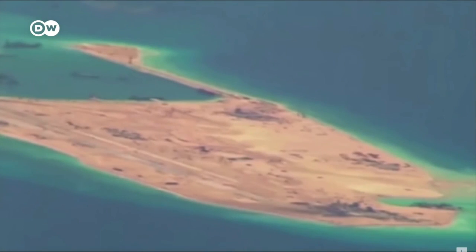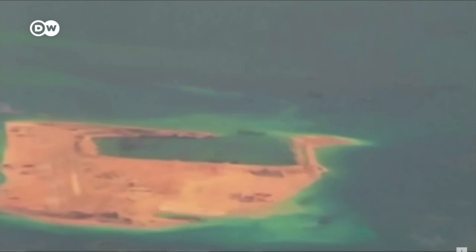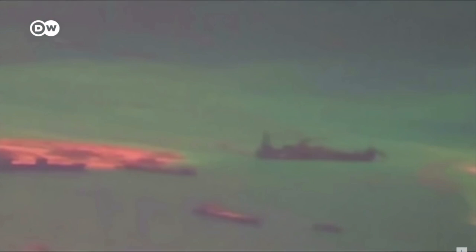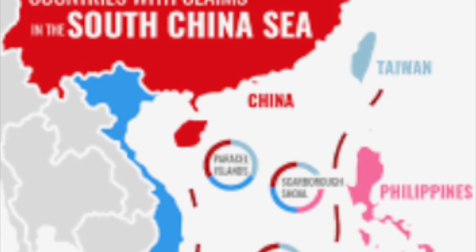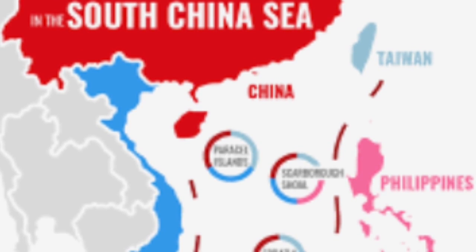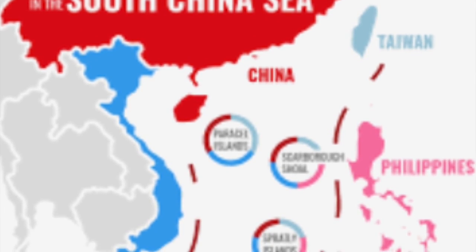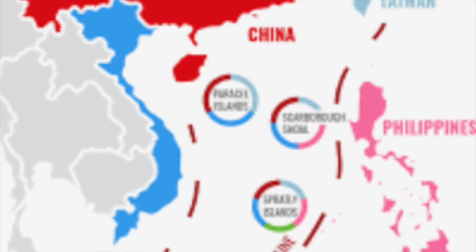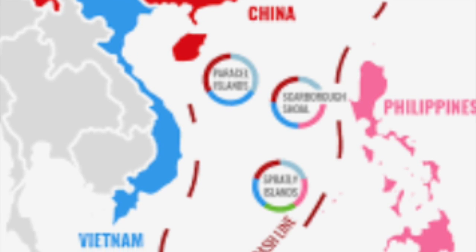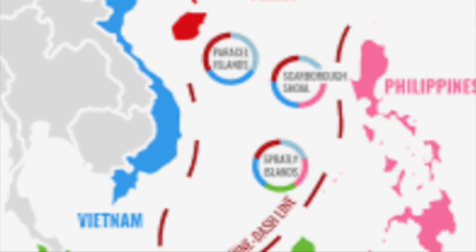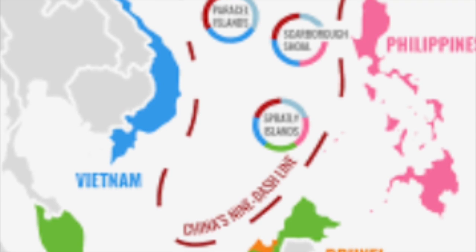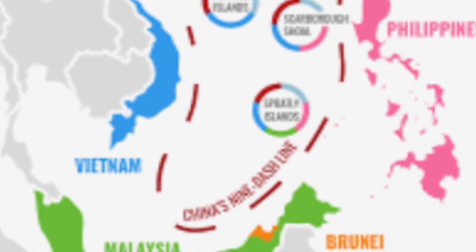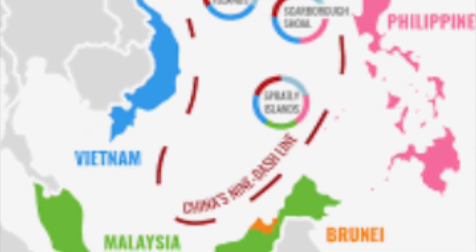An important part about understanding the conflict involves understanding the different perspectives. There are many different perspectives because of the variety of countries involved, however I'm going to be splitting it up into three different parts: the Chinese, the other Asian countries, and America.